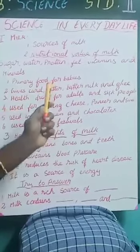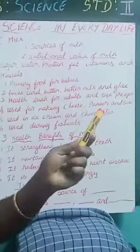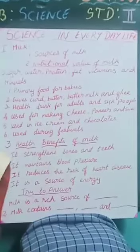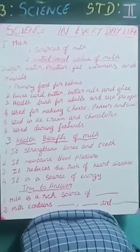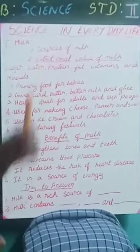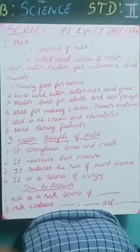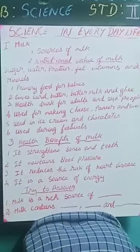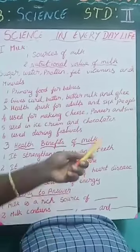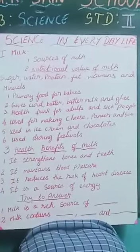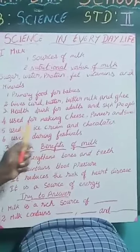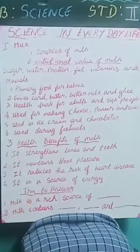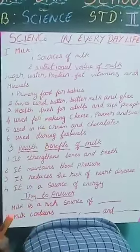Second one: milk is used to make curd, butter, buttermilk, and ghee. These are the things you obtain from milk. Third one: it is a health drink for adults and sick persons. Anybody having sickness, fever, or anything — they will give one tumbler of milk. It is a health drink for adults as well as children. Fourth one: it is used for making cheese, paneer, and sweets. Milk sweets, cheese, and paneer are all made from milk. It is also used in ice creams and chocolates.